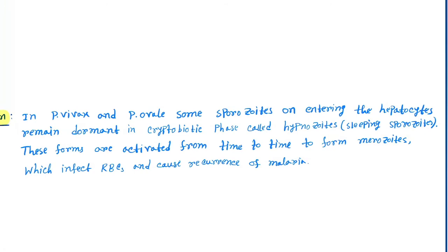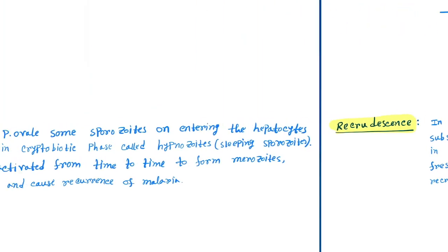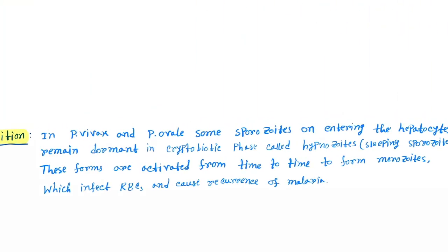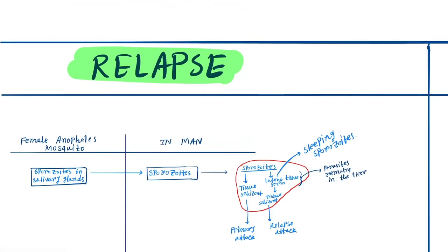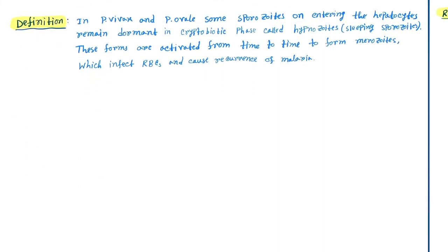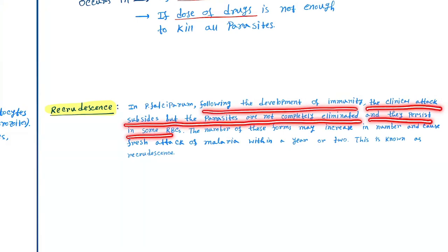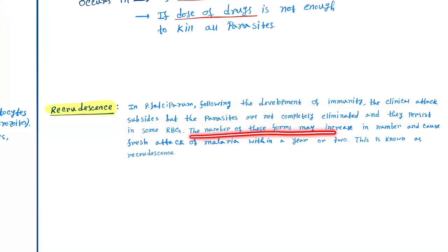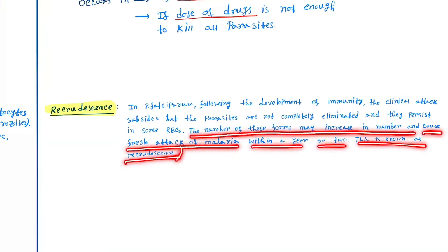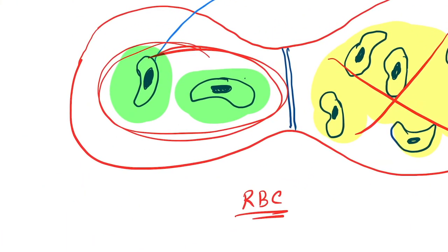These forms are activated from time to time to form merozoites, which infect RBCs and cause recurrence of malaria. For recrudescence in Plasmodium falciparum, following the development of immunity, the clinical attack subsides, but the parasites are not completely eliminated. They persist in some RBCs, and the number of these forms may increase and cause subsequent attacks of malaria.